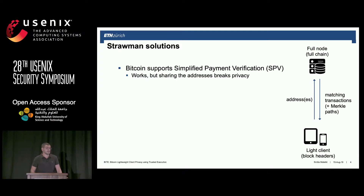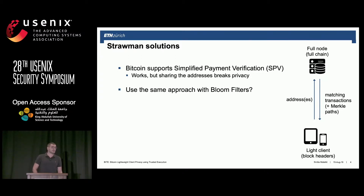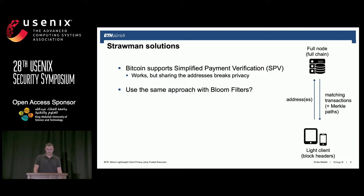This works, however sharing the addresses completely breaks privacy. The other approach developed later, improvement proposal BIP 37, introduces bloom filters that allow a light client to request a subset of all transactions in the blocks of interest to preserve some privacy without needing to download the full chain. You define a set of transactions with false positives and then request the full node deliver them to you. This approach presents a trade-off between communication efficiency and privacy.